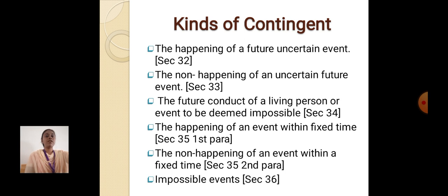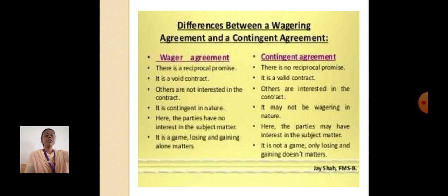Kinds of Contingent Contract: the happening of a future uncertain event; the non-happening of an uncertain future event; the future conduct of a living person or event to be deemed impossible; the happening of an event within a fixed time; the non-happening of an event within a fixed time; and impossible events.